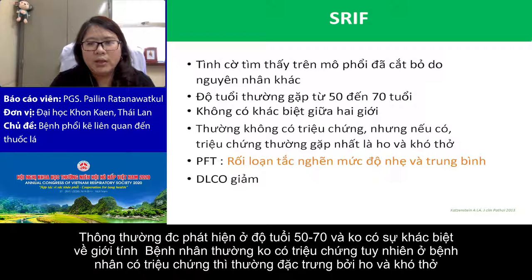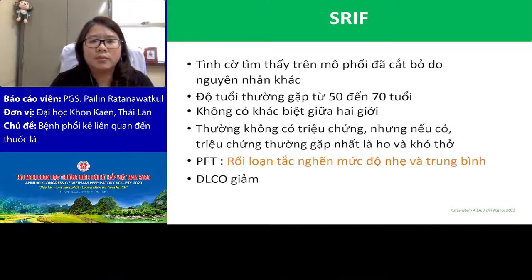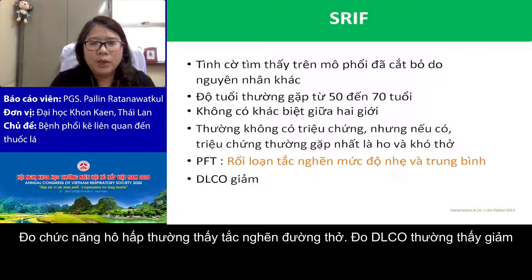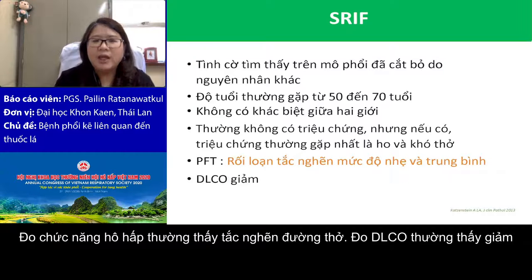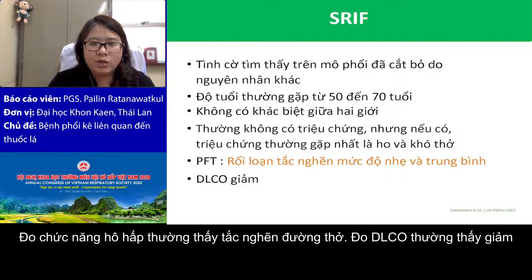However, in symptomatic patients, the most common presentations are cough and dyspnea. Pulmonary function tests commonly show obstruction. RB-ILD shows mixed obstruction and restriction; DIP shows restriction; SRIF shows obstruction. DLCO is usually reduced.